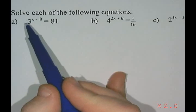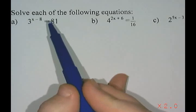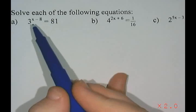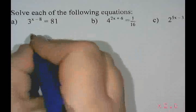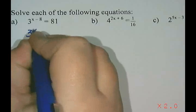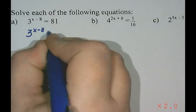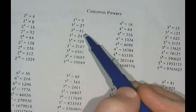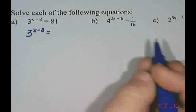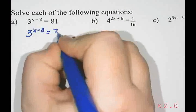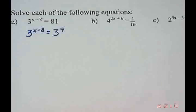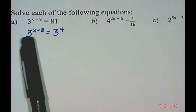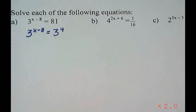What I'd like to do is take 81 and write it as a power of 3. We could use trial and error on a calculator, or I'm going to use my power sheet. If I look at the powers of 3, 81 is 3 to the power of 4. So I'm going to say that 81 is 3 to the power of 4, writing them as powers of the same base.